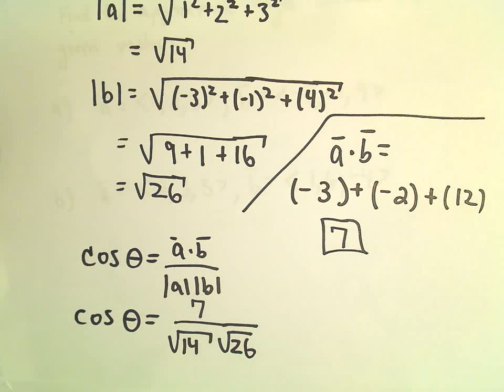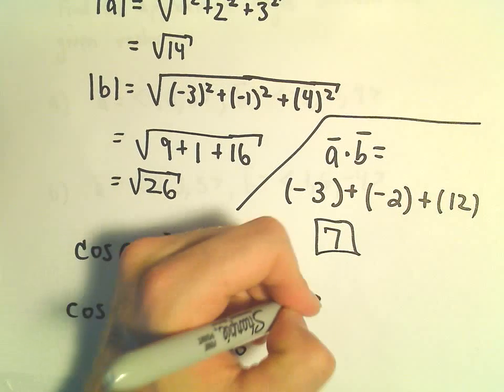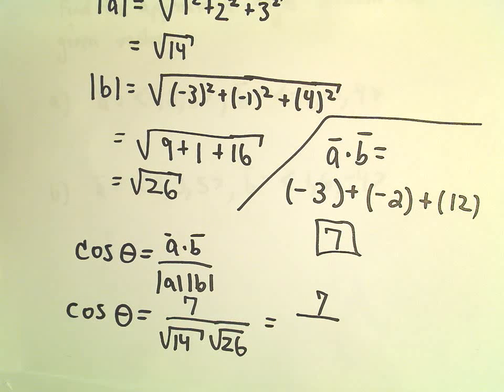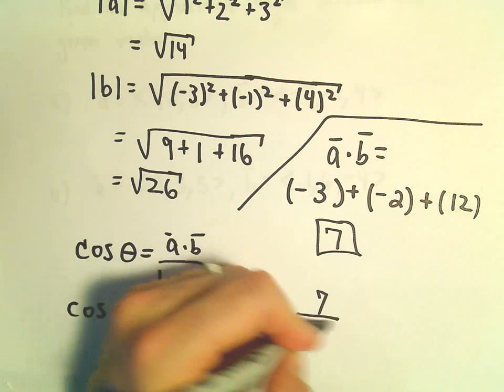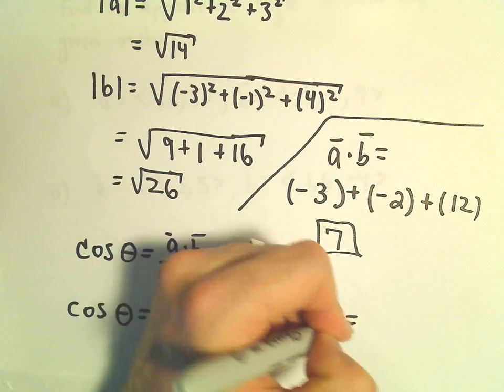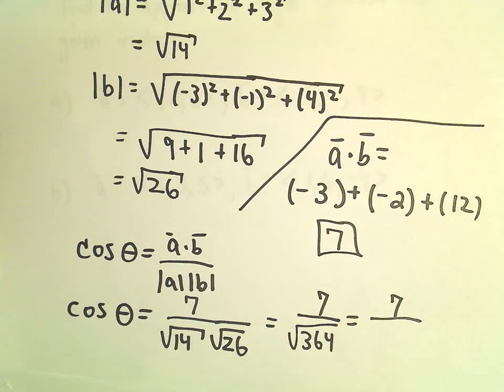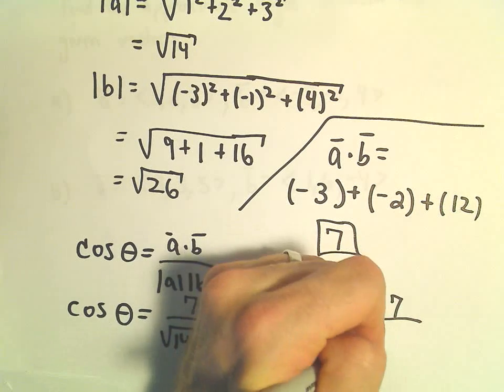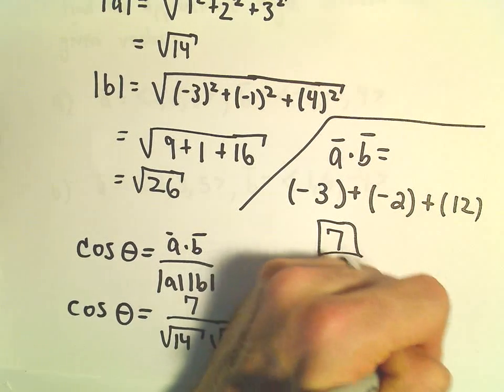So I'm going to simplify this down a little bit. I'm definitely going to start estimating here. So 14 times 26, that's 364. So we've got the square root of 364. Well, the square root of 364 is roughly 19.08.